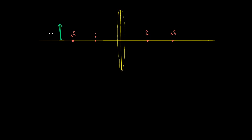It's useful to draw one ray. Remember, every point on this object is emitting rays in every direction because it's diffusely reflecting light, so we pick rays that are convenient. We go from the tip of this arrow parallel to the principal axis. We know that if we enter the lens parallel to the principal axis, when we get refracted, we will go through the focal point on the other side of the lens.